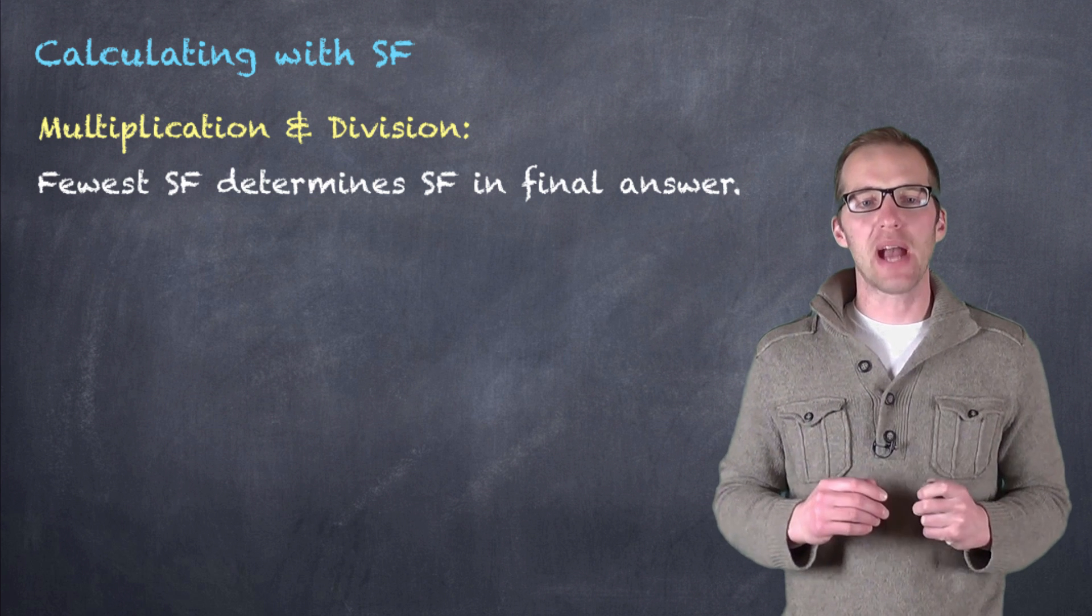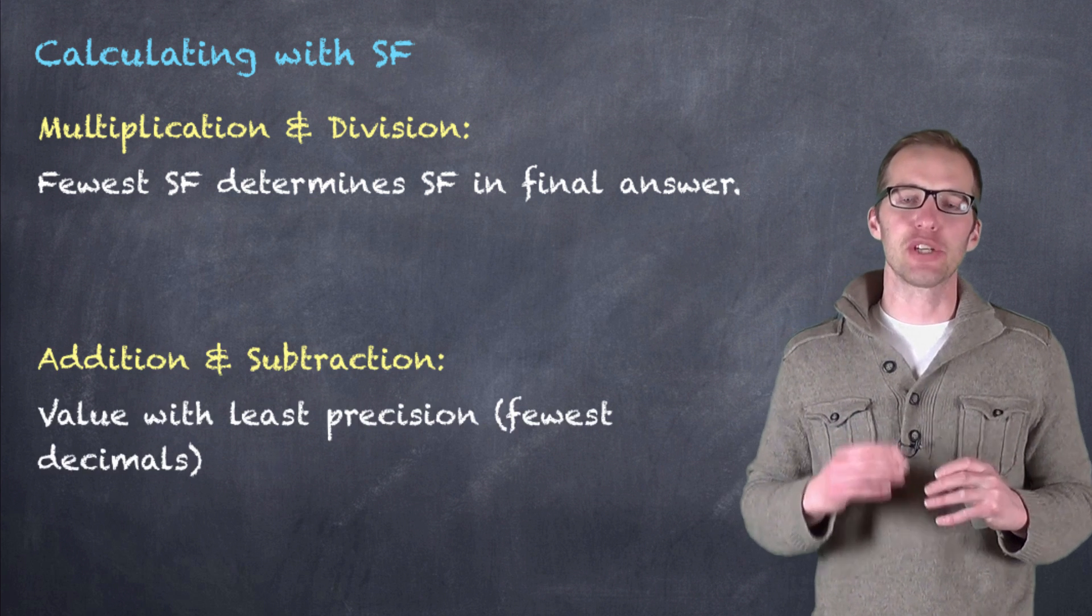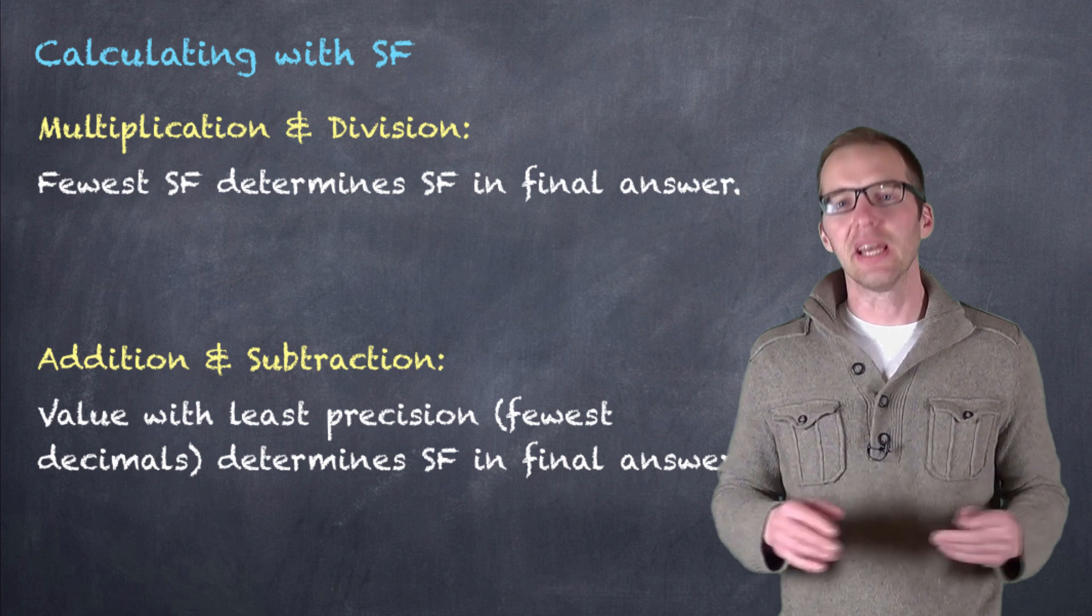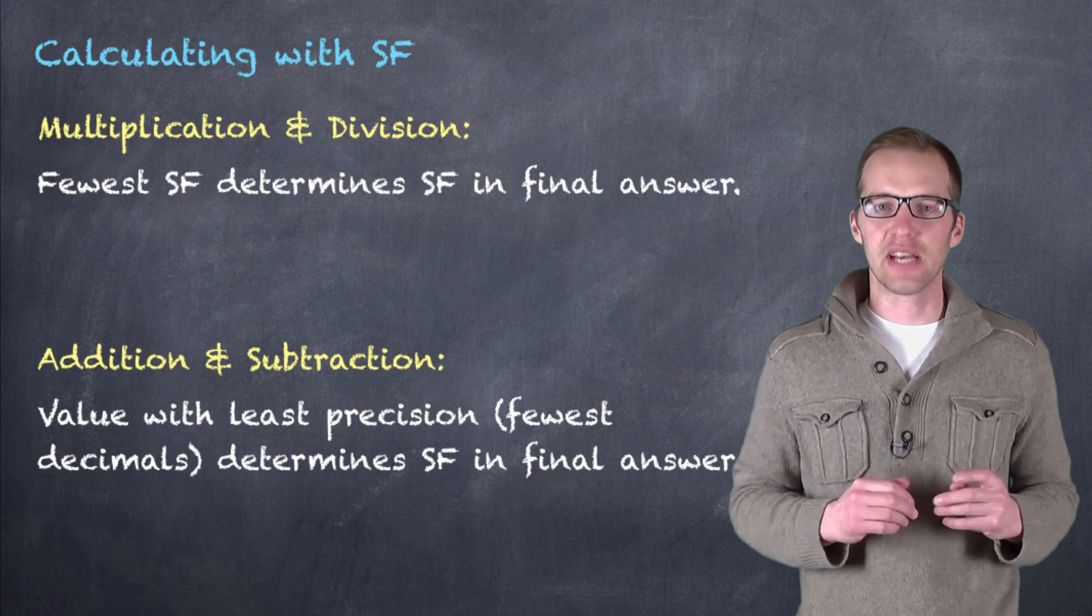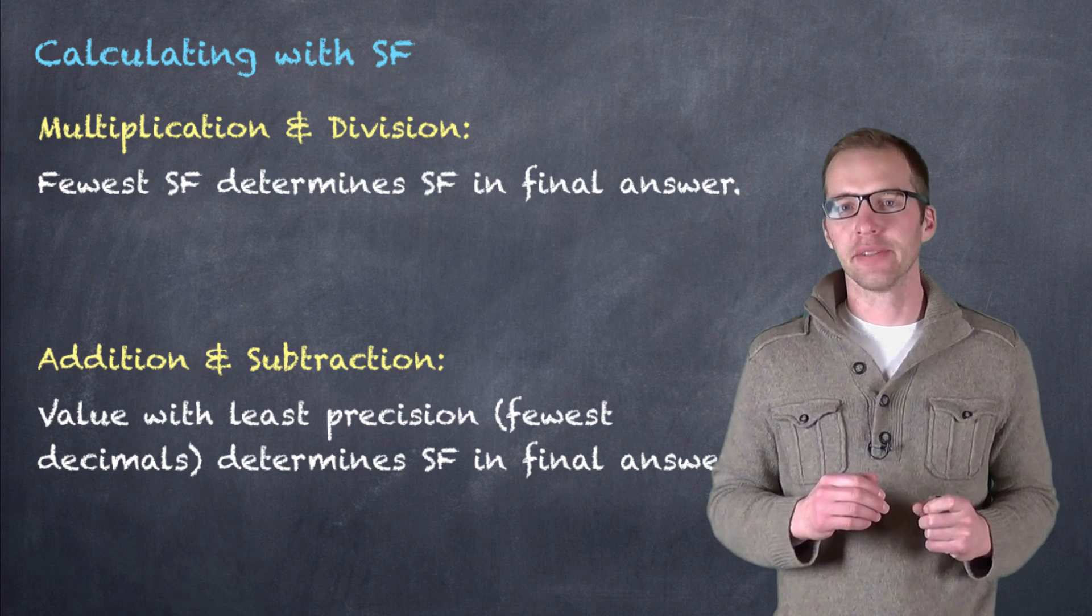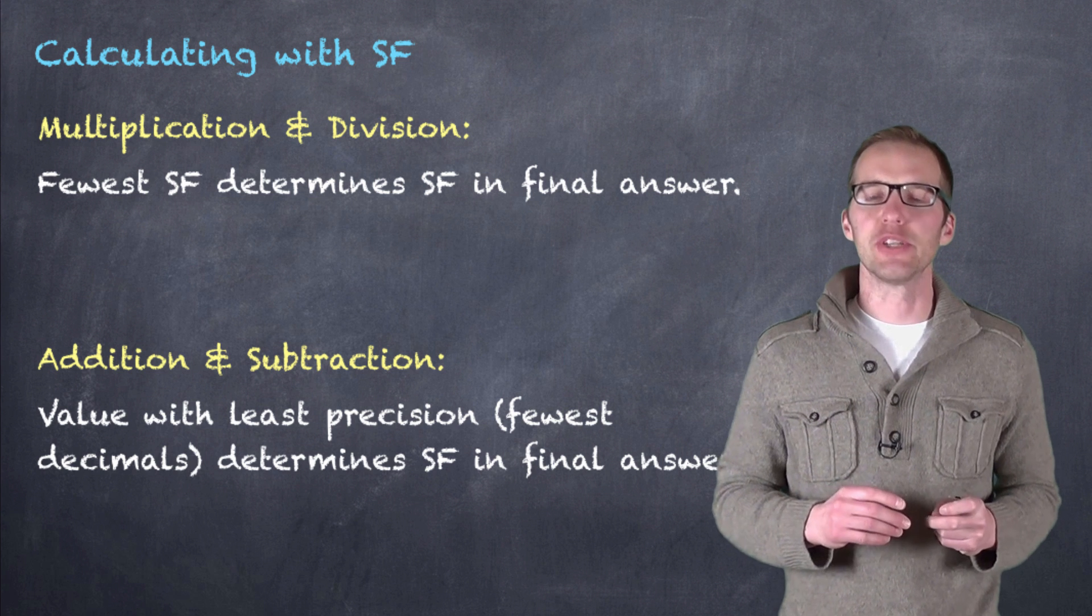In addition and subtraction, the value with the least precise measurement is what we're going for. So really the one with the fewest number of decimal places is what we're looking at. Not clear? Well, let's take a look at an example for each.